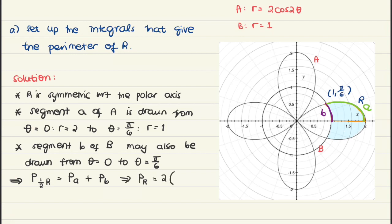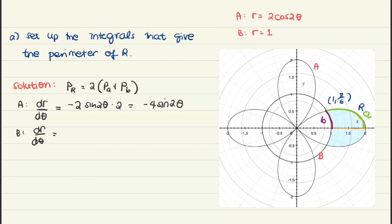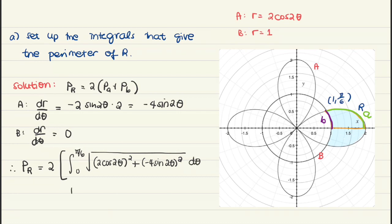The perimeter of the whole region is twice the sum of the lengths of A and B. For each arc length, we need the derivative. For segment A, dr over d theta is negative 4 sine 2 theta. For segment B, dr over d theta is just 0. The perimeter is twice the integral from 0 to pi over 6 of the square root of 2 cosine 2 theta quantity squared plus negative 4 sine 2 theta quantity squared d theta, plus the integral from 0 to pi over 6 of the square root of 1 squared plus 0 squared d theta.